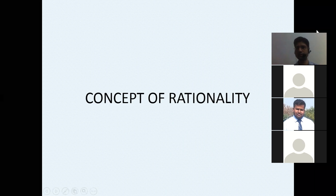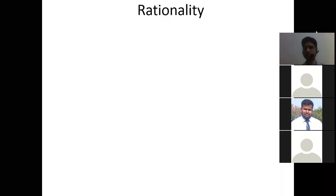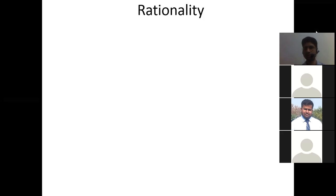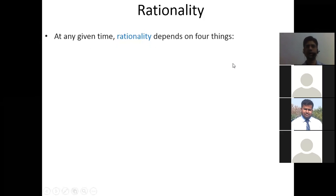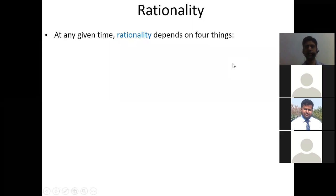In the previous class, we have seen the concept of rationality and then we have seen the intelligent agency structures. What is rationality at any given time? At any given time, rationality depends upon four things.